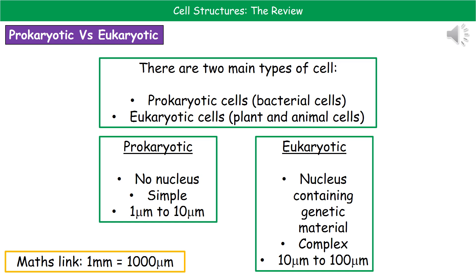If we then compare the actual complexity of those cells, prokaryotic cells are relatively simple whereas eukaryotic cells are more complex. The last comparison is to do with their sizes: prokaryotic cells are between 1 micrometer to 10 micrometers, whereas eukaryotic cells are bigger, being 10 micrometers to 100 micrometers.